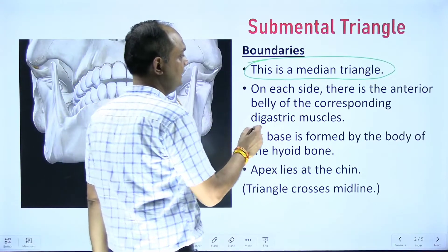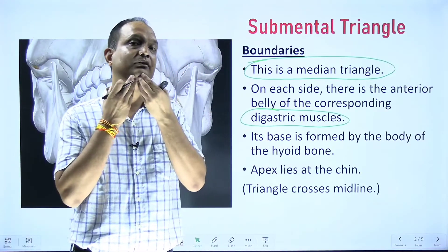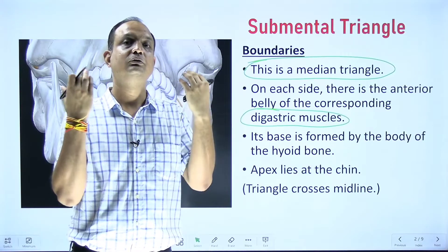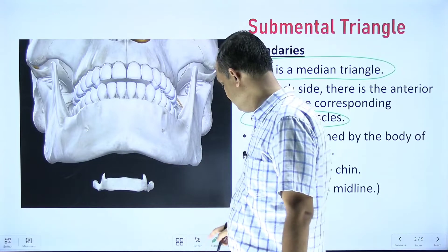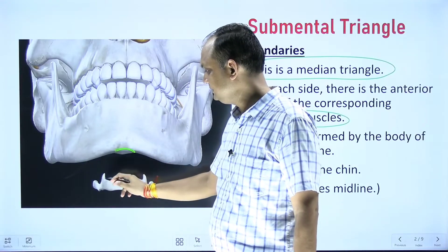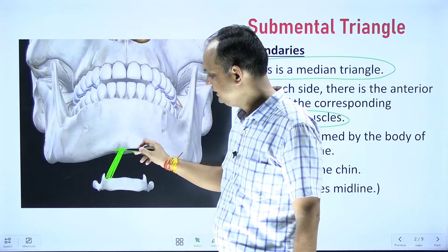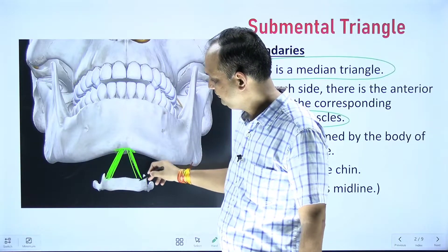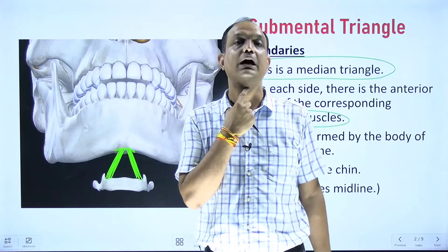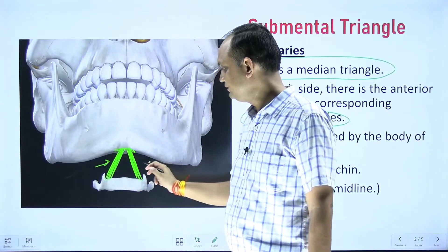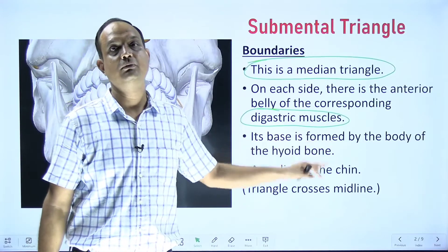On each side, the boundary is formed by the anterior belly of the corresponding digastric muscle. Viewing from the front, you can see the base of the mandible and the hyoid bone, with the right and left anterior bellies of the digastric muscles on each side. The triangle is present between the chin and the hyoid bone, bounded laterally by the respective anterior bellies of the two digastric muscles.